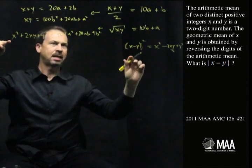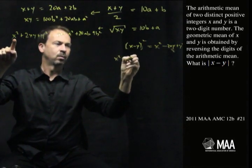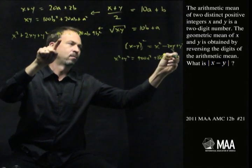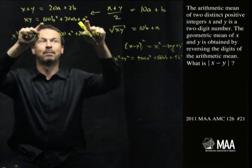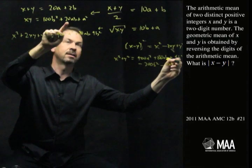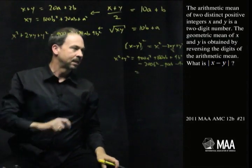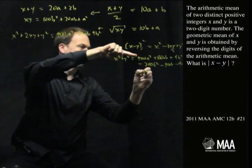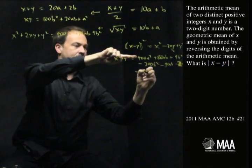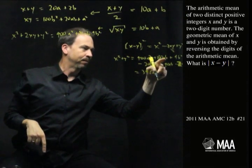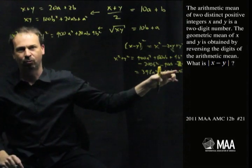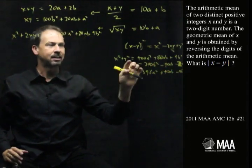Let me bring this work over here. x² + y² would be 400a² plus 80ab plus 4b² minus 2xy, minus double that formula—minus 200b² minus 40ab minus 2a². Let me collect some terms. 400 minus 2a² is 398a². What about the abs? I've got plus 40ab and negative 196b².